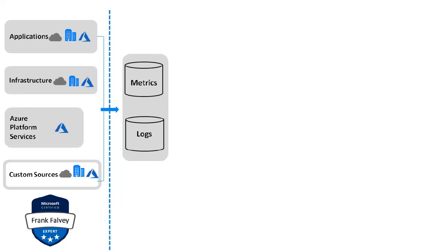As for logs, logs contain different kinds of data organized into records with different sets of properties for each type. Telemetry such as events and traces are stored in logs in addition to performance data, so that they can be combined for analysis.